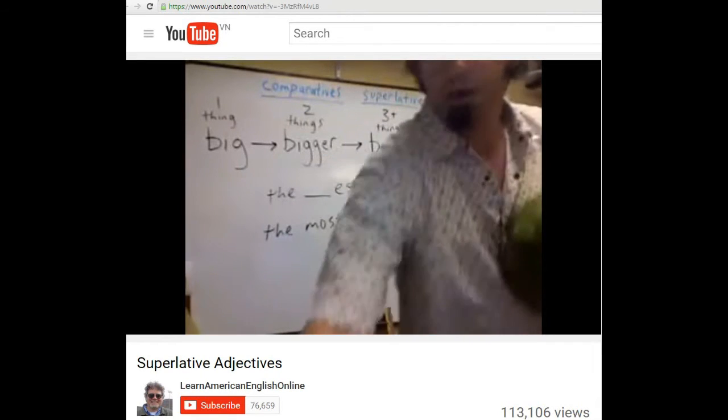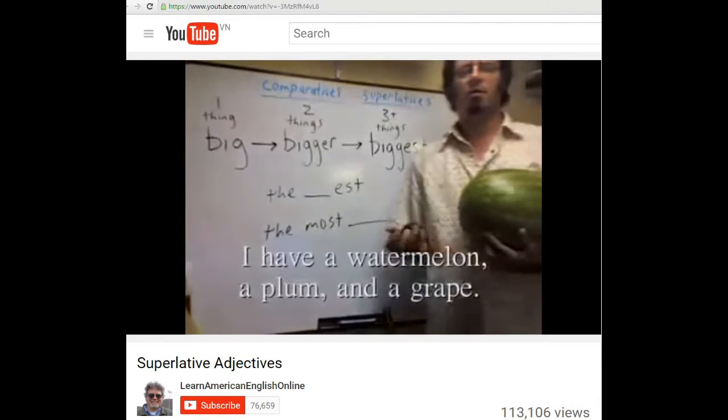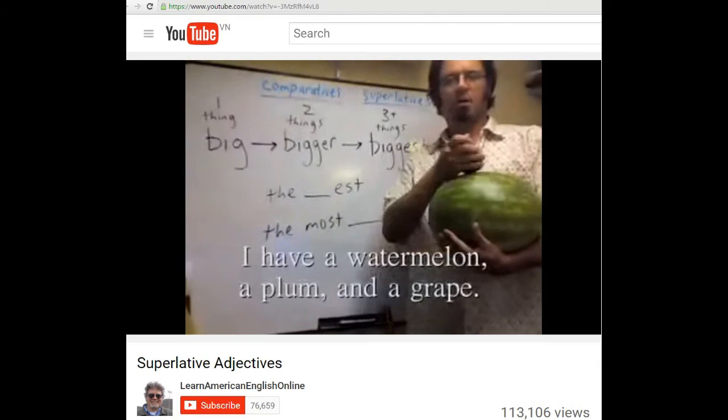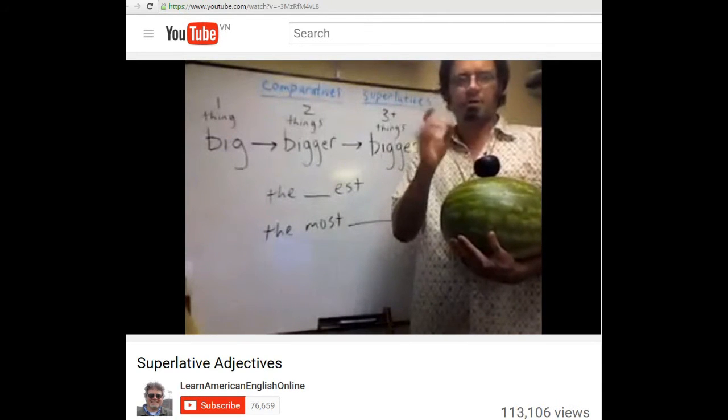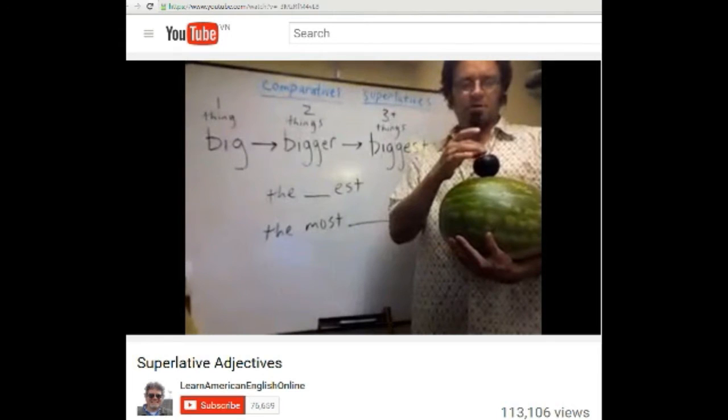If I have three things, I have a watermelon, a plum, and here's a grape. Và giả sử tôi có ba quả, một quả dưa hấu, một quả mật, và một quả nho.